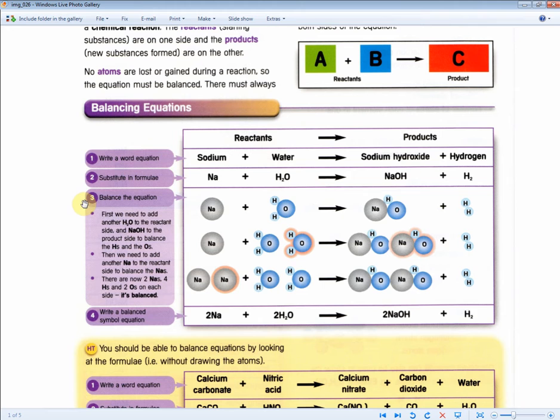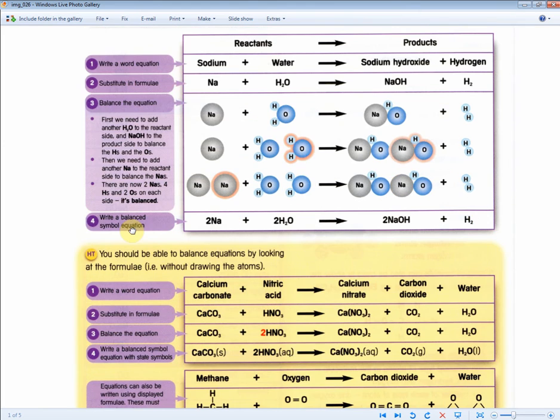Within this section, it's advisable to memorize step 1 and step 4. Steps 2 and 3 are basically the steps in between to get to step 4. They're never really going to ask you to just write the symbol equation that's not balanced. 9 times out of 10, it's always going to be a balanced symbol equation. So to save you revision time, steps 1 and 4 need revising.